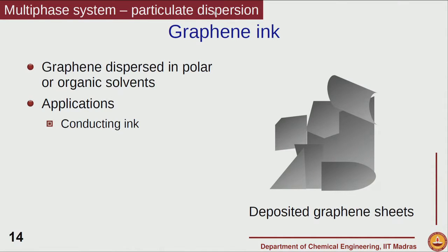In the previous lecture we looked at the macromolecular systems. Continuing on, we will look at some of the prominent classes of materials which are multi-phase systems. We begin with a particulate dispersion — by this we mean the amount of particulate material, in this case graphene, is small.